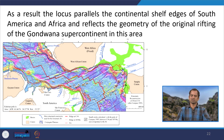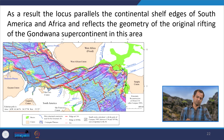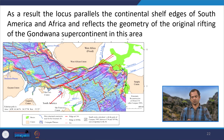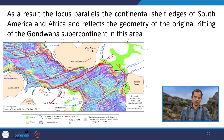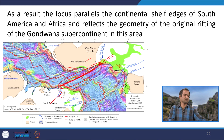As a result, the locus of the step-like ridge crest and transform fault sequence in the equatorial Atlantic has remained essentially unchanged. It parallels the continental shelf edge of South America and Africa and reflects the geometry of the original rifting of the Gondwana supercontinent. The Atlantic Ocean has developed through this process and Gondwana has separated into different segments, but the transform motion that started during Gondwana time is still continuing.